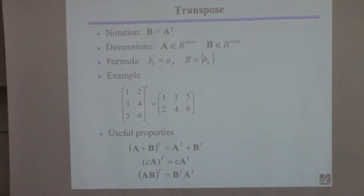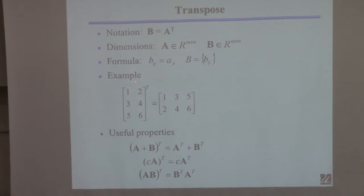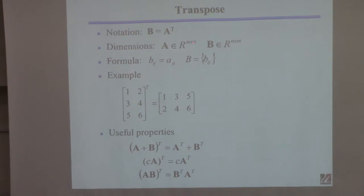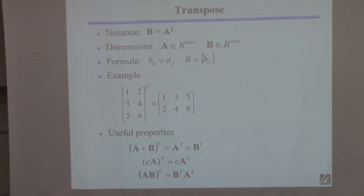Here are some operations on matrices we'll use a lot. There's something called the transpose. If I have a matrix A and transpose it, the first column becomes the first row, the second column becomes the second row — I switch rows and columns. If A has M rows and N columns, the transpose B will have N rows and M columns.